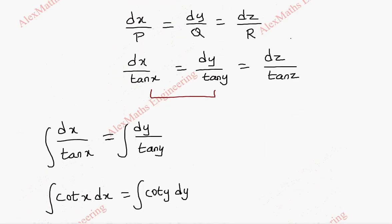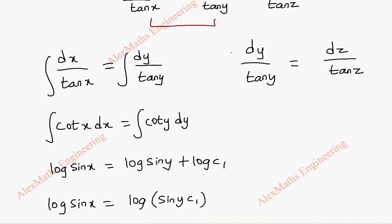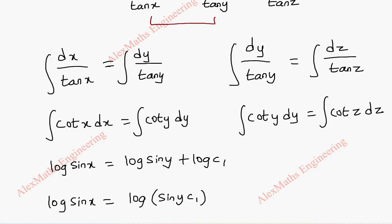In the same way, we are going to take the another two terms. That is dy by tan y equal to dz by tan z. Already, this is of the variable separable form. We take integration on both the sides. And one by tan y is cot y. So we have integral cot y dy, and on the other side, integral cot z dz.